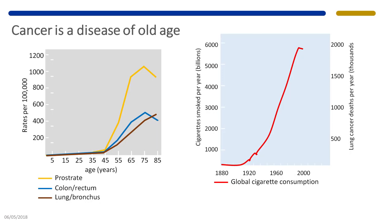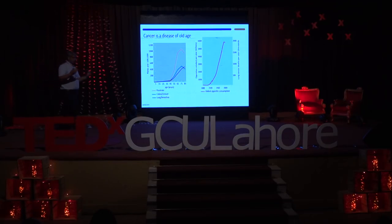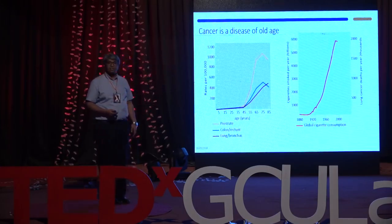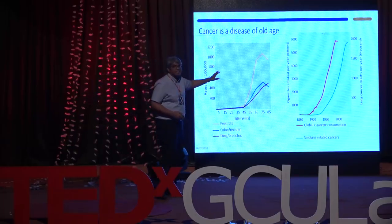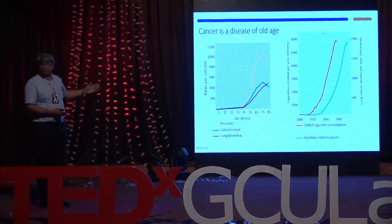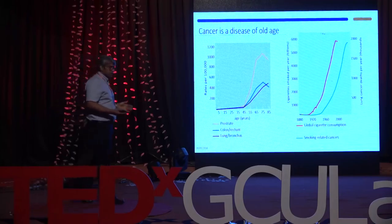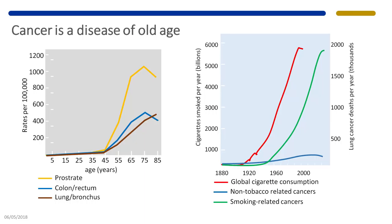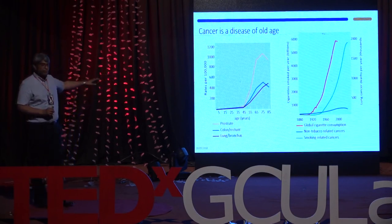About 70 to 80 percent of cancers are caused by environmental factors and lifestyle choices. The biggest example is smoking. After World War II, cigarette consumption increased enormously because American soldiers were given cigarettes as their ration and became addicted to nicotine. Around 20 years later, lung cancers also increased in parallel — meaning it took people who started smoking about 20 years until they started developing lung cancer.